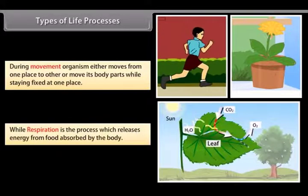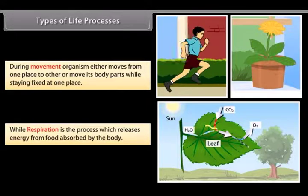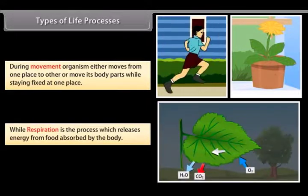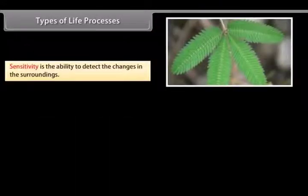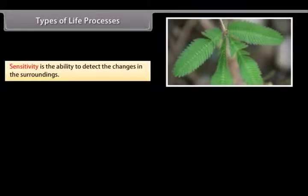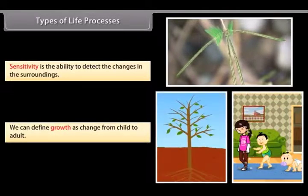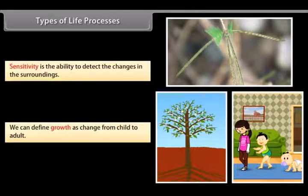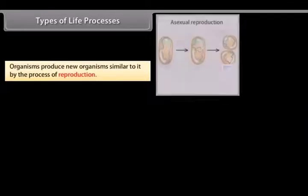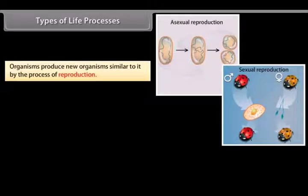Respiration is the process which releases energy from food absorbed by the body. Sensitivity is the ability to detect changes in the surroundings. We can define growth as change from child to adult. Organisms produce new organisms similar to it by the process of reproduction.